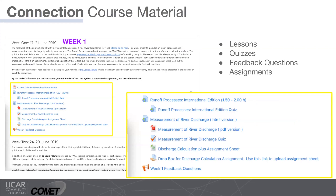Once we're in the course, the first assignment was a Comet module on runoff processes with a required quiz. The second assignment — measurement of river discharge — was something our colleagues at the National Water Academy in India put together, with spreadsheets where students had to calculate river discharge and submit them to a drop box, which instructors in India would grade. There were also feedback questions at the end of each week covering important points from the week, but also asking for feedback from students about how things are going so instructors know what needs to be adjusted.